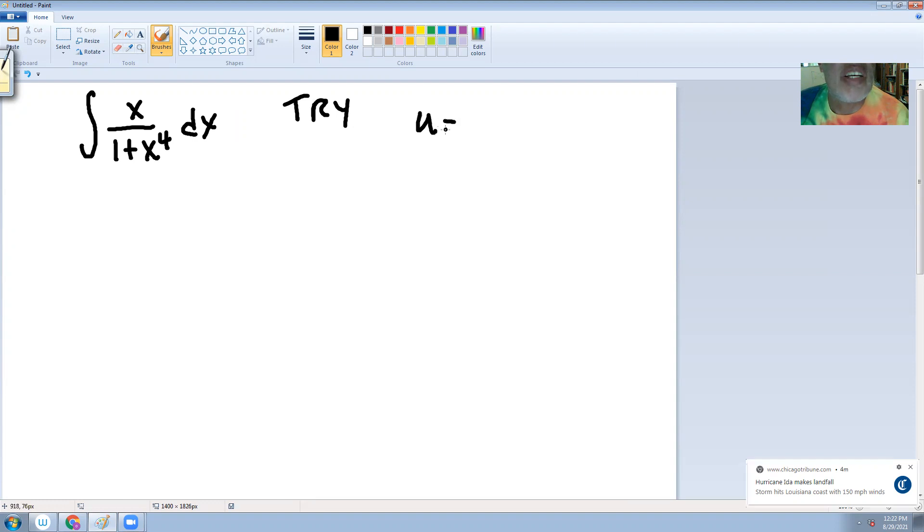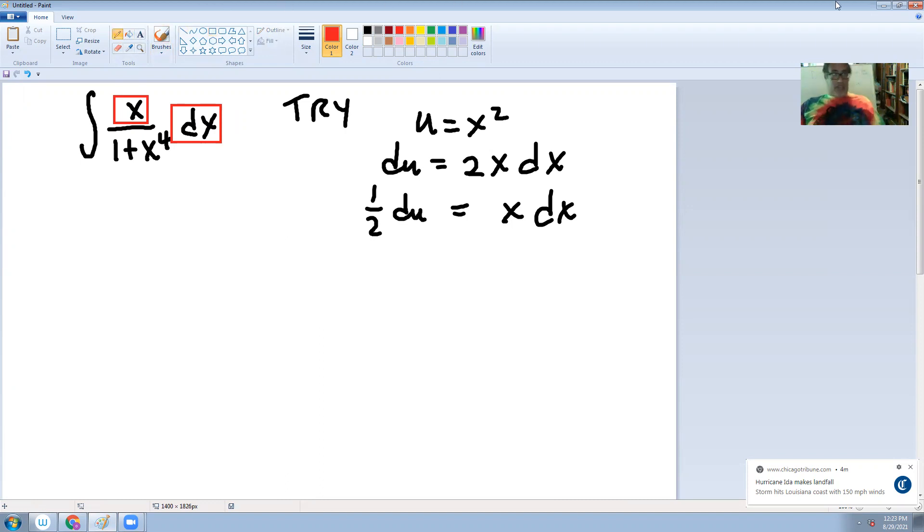Try u equals x squared, then du equals 2x dx, and one half du equals x dx, which in fact, if you notice, we have the x and we have the dx right here, right? So that might not be a bad thing to try.